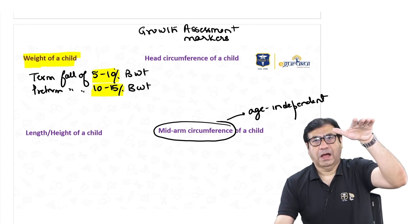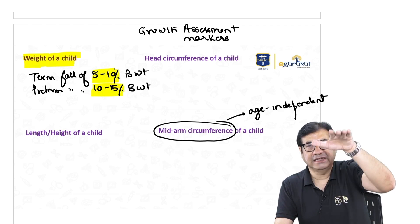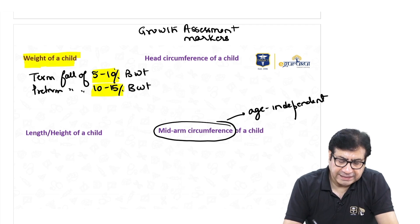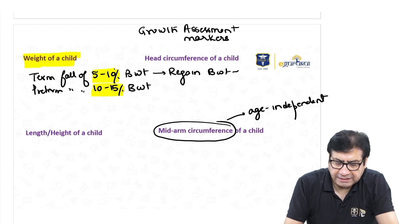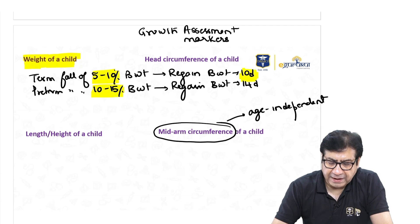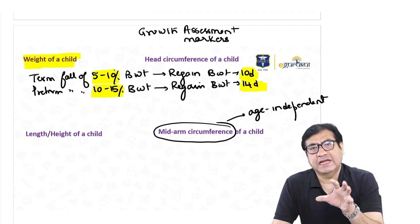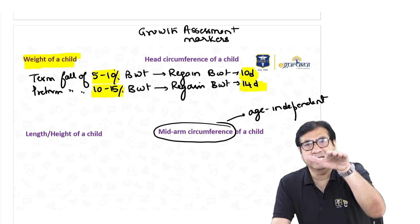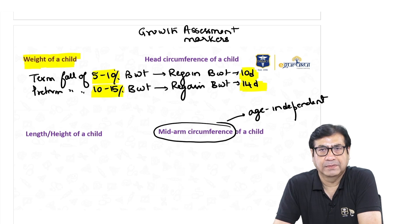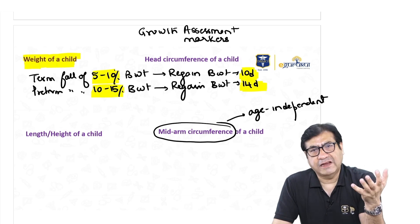After the initial fall in weight, the weight starts increasing again. Term newborns regain their birth weight by the 10th day of life, while preterm newborns regain their birth weight by the 14th day of life. After that, the weight of the child gradually increases.